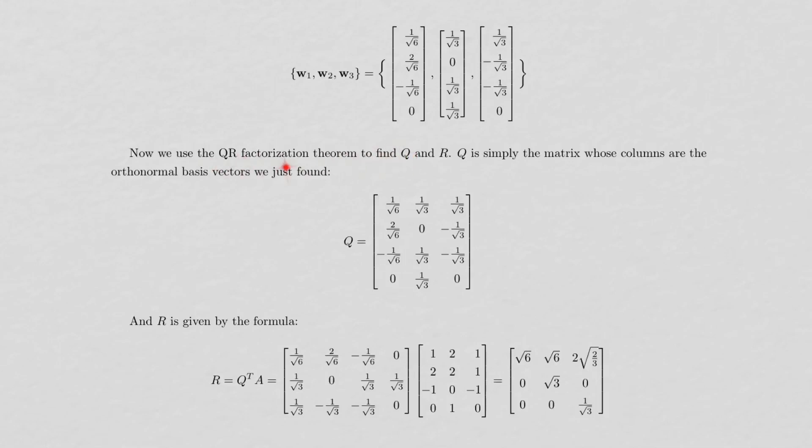Q is defined to be the matrix whose columns are these orthonormal basis vectors. So you just take these vectors and put them into the matrix Q. Then we have this formula for R. R is Q transpose A. So here's the transpose of Q. Here's A. Just multiply them together on a calculator or a computer.